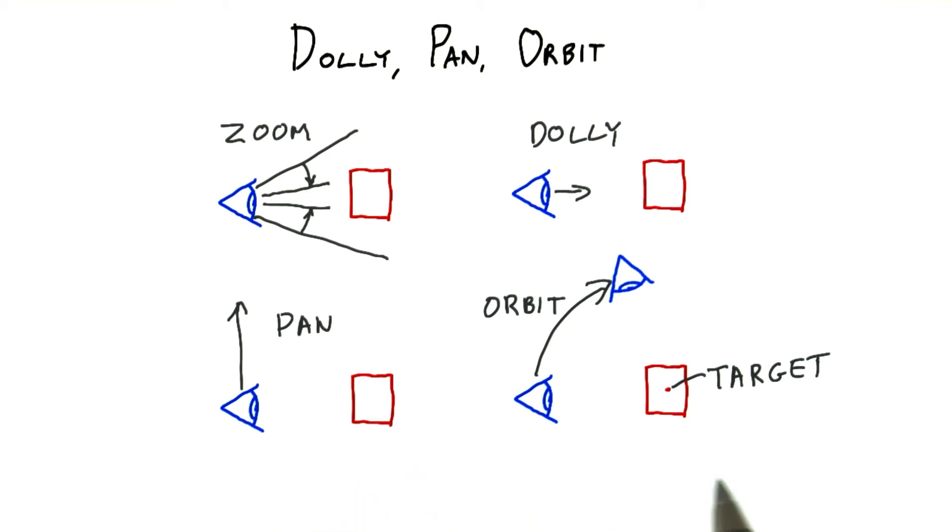Orbiting means circling around the target position, similar to how a satellite orbits the earth. For those of you into first person shooters, it's circle strafing a target.